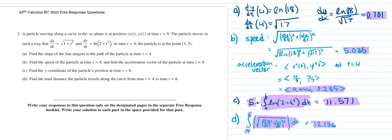Part D asks to find the total distance the particle travels along the curve from time equals 4 to time equals 6. For total distance, we use the integral from 4 to 6 of the square root of (dy/dt)² plus (dx/dt)². I plugged that into the calculator for the answer: 12.136. What's in purple is part of the answer on our answer sheet: the integral, the limits of integration, and the final answer.